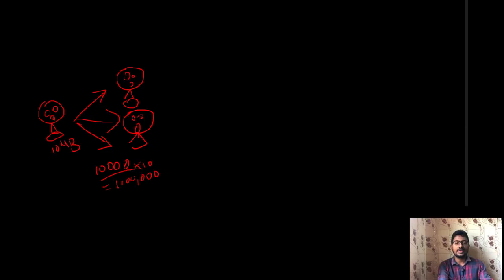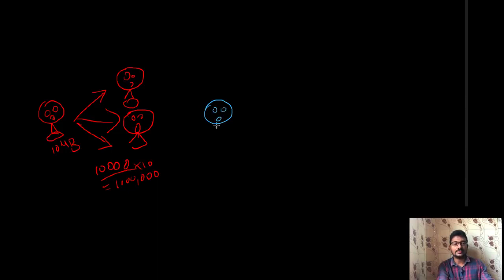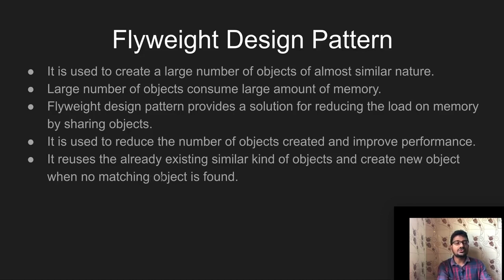For example, suppose we have a red color Angry Bird. Instead of creating thousands of red color Angry Bird objects, we create just one object and reuse it. If there is a blue color Angry Bird, we check for existing objects. If a matching object exists, we reuse it. That is the Flyweight principle.